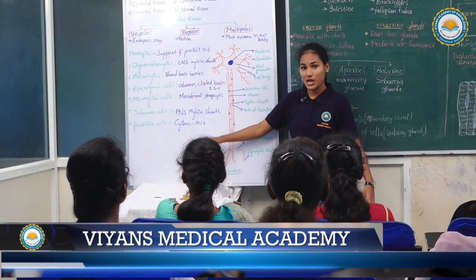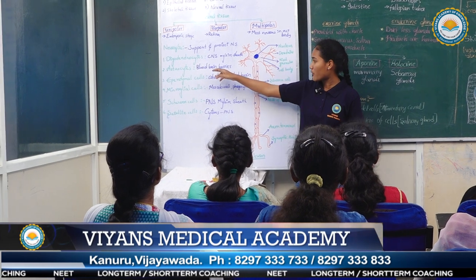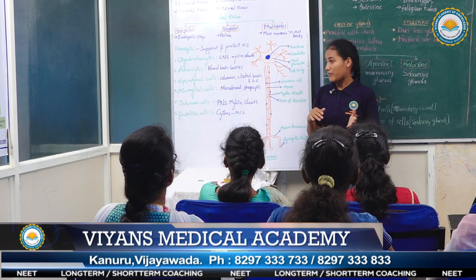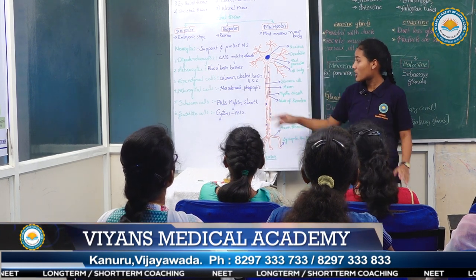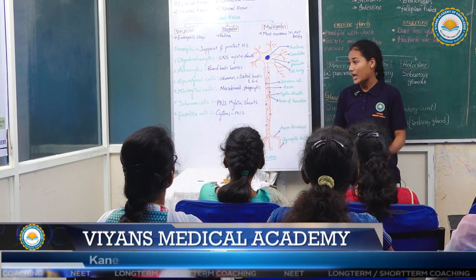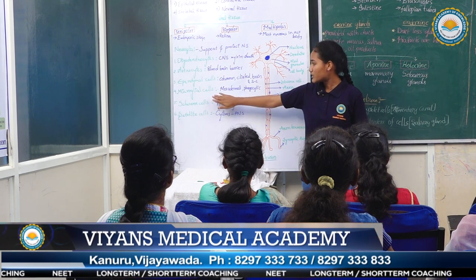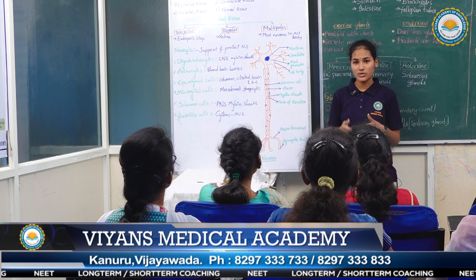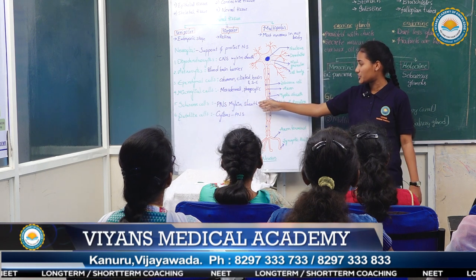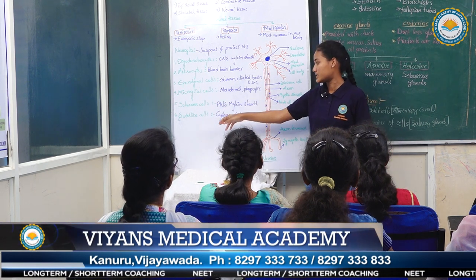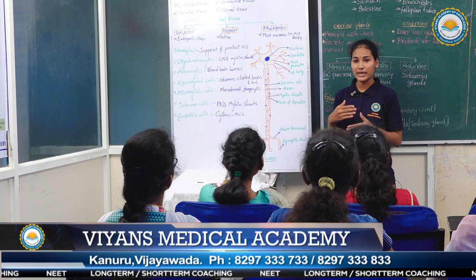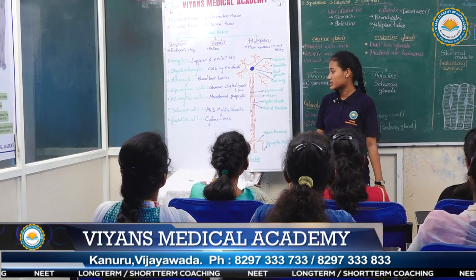Astrocytes are star-shaped cells that provide the blood-brain barrier and form interconnected networks between neurons and capillaries. Ependymal cells are columnar ciliated cells found in the lining of cavities like the brain and spinal cord. Microglial cells are mesodermal in origin and are phagocytic cells. Schwann cells form the myelin sheath around axons in the peripheral nervous system. Satellite cells form sheaths around ganglia in the peripheral nervous system.